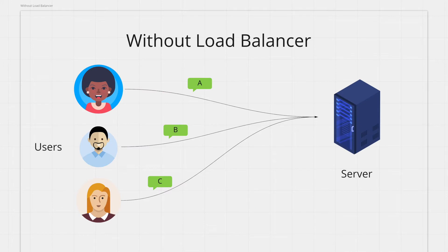This is how your architecture looks without load balancers. You have only one server that is running your application. Whenever users want to visit your website, they send requests to your lone server and your server responds back. This works fine for a small amount of users. However, the moment you start getting more and more users, you'll start hitting scaling issues.